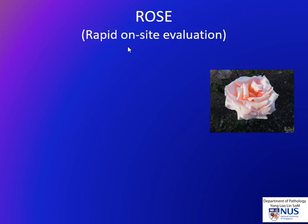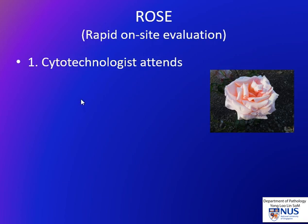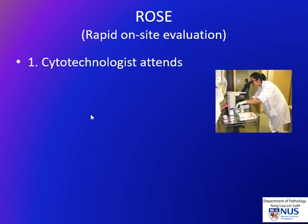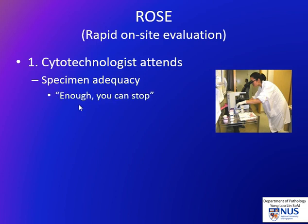ROWS stands for Rapid On-Site Evaluation, and usually the cytotechnologist will attend this procedure. In some centres the pathologist also attends. What we do is assess specimen adequacy. We do this by rapidly staining smears — we prepare the smears on site, stain them, and then have a quick look down the microscope to decide whether they're adequate, whether we can tell the clinicians you can stop now, you have enough material.